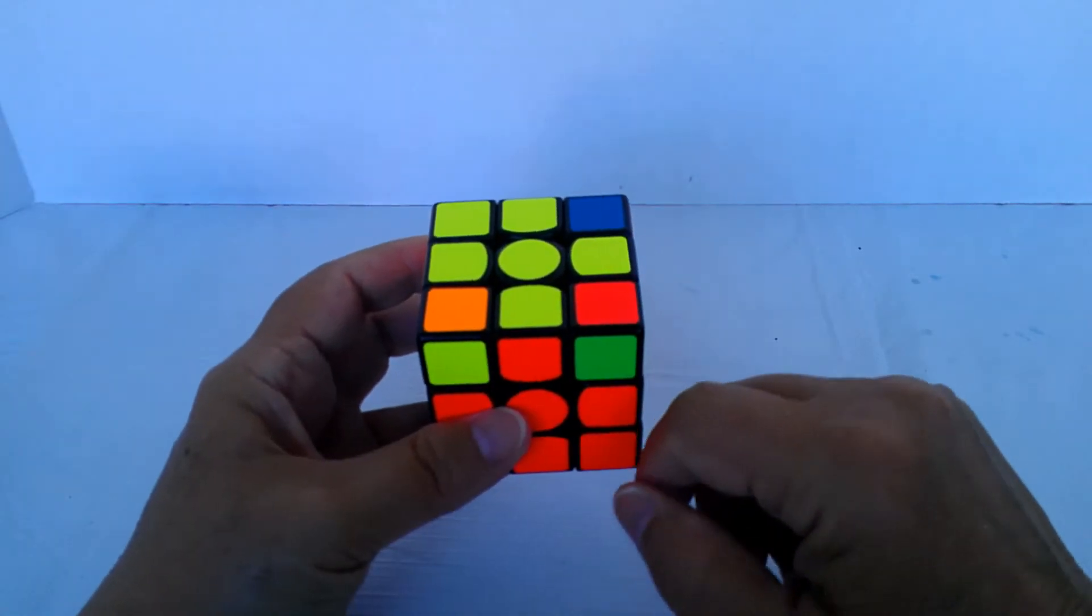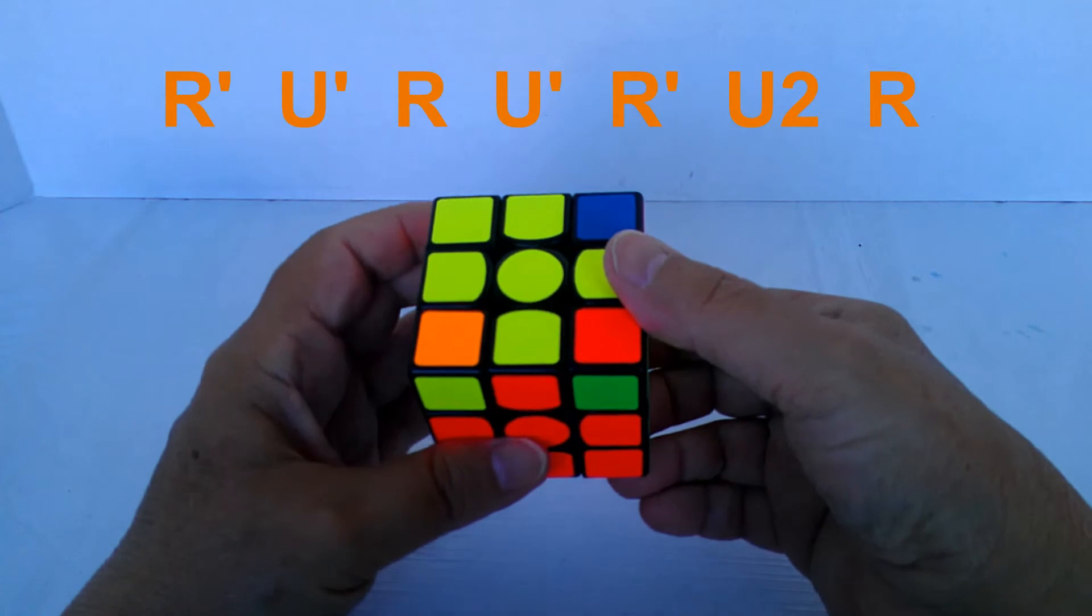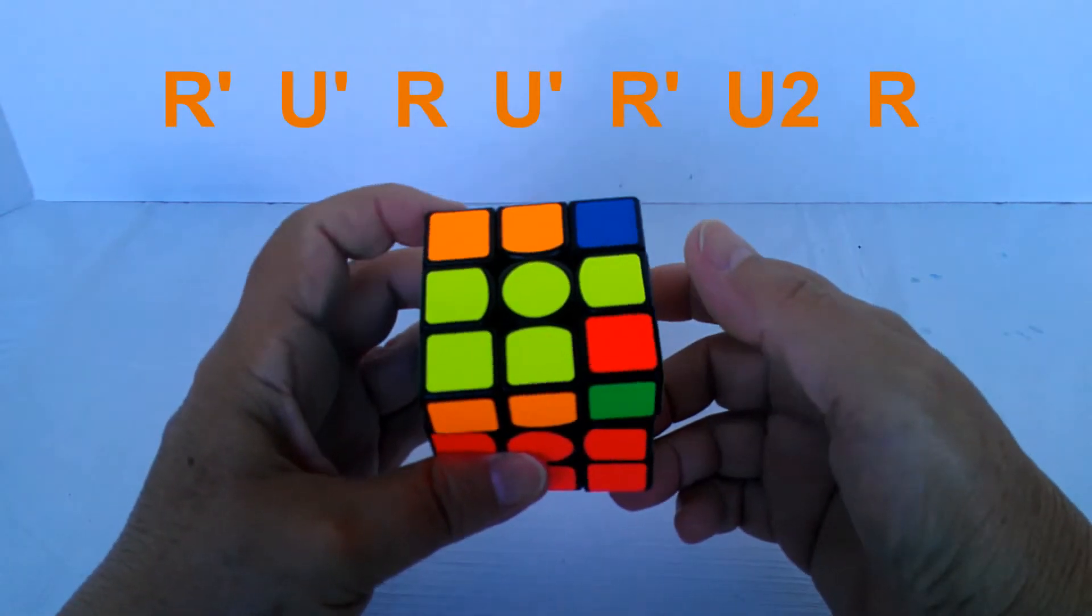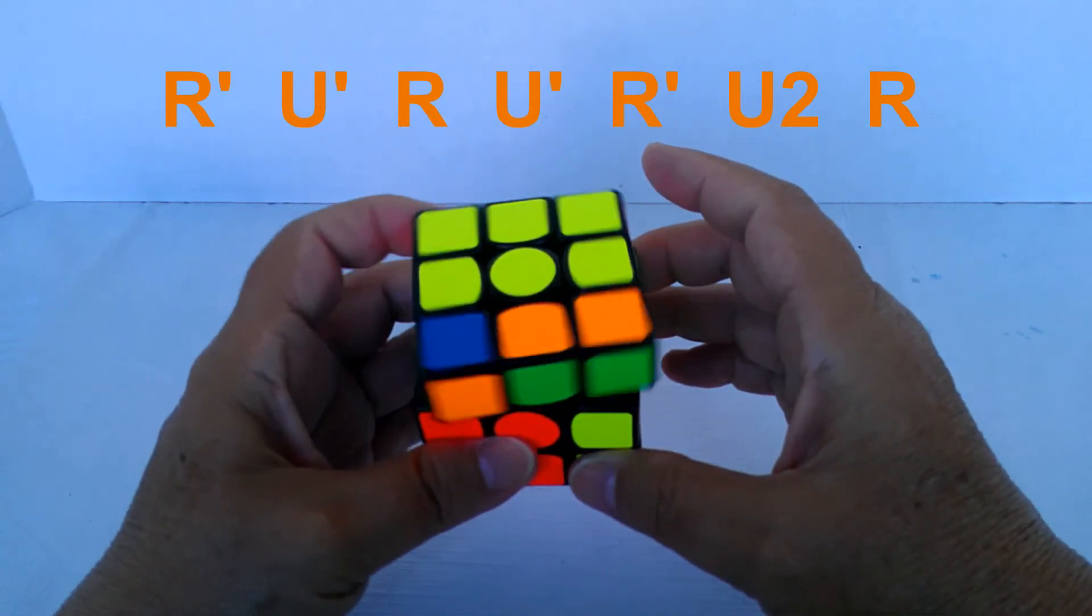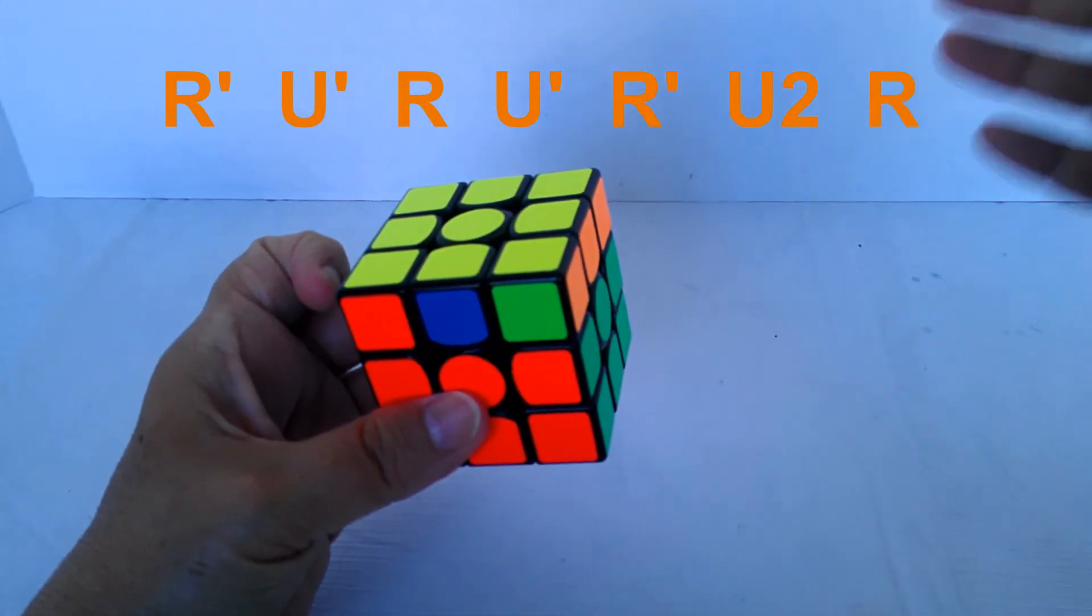And now this one is facing you. And what you do is this series of moves: an R prime, U prime, R, U prime, R prime, U2, R. And it's that simple.